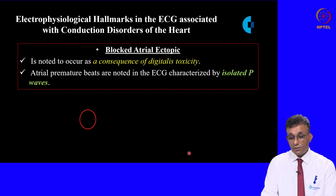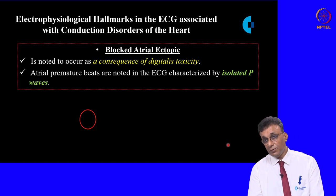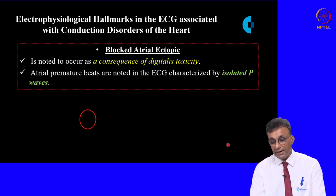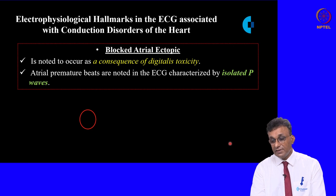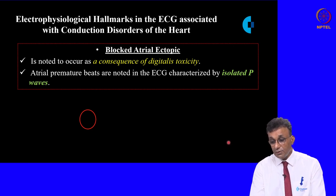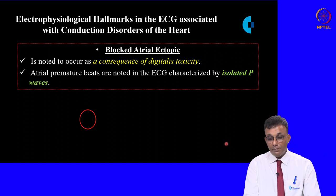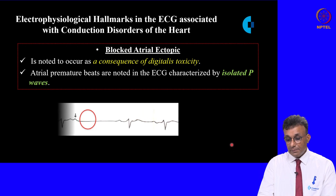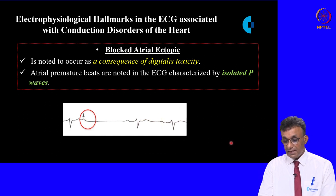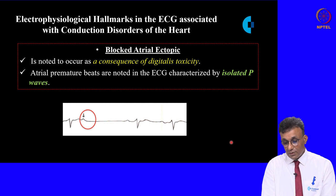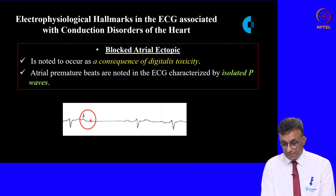The blocked atrial ectopic occurs as a consequence of digitalis toxicity — digitalis being the drug used to manage cardiac failure. In a blocked atrial ectopic, atrial premature beats are noted in the ECG as a single entity, also known as isolated P waves, as seen in this tracing.